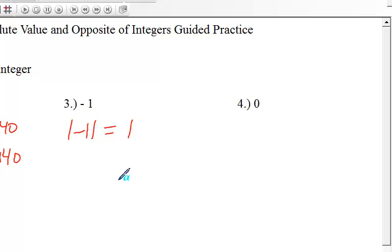Now the second thing it asks us to do is find the opposite. So the opposite of negative 1, what is on the right-hand side that is exactly one unit from it with a different sign? And that will be 1.